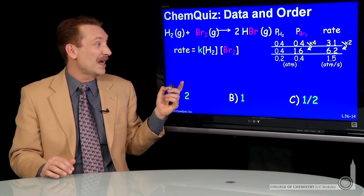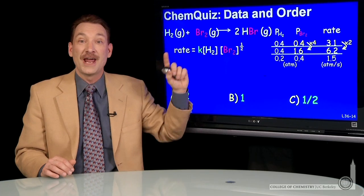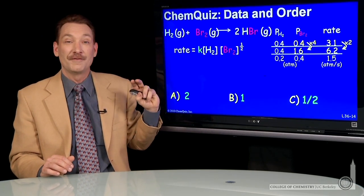So if I'm going to write down a rate law, it sounds like the rate should be proportional to Br₂ to the 1/2 power, the square root. Quadruple the concentration gives you a doubling of the rate.